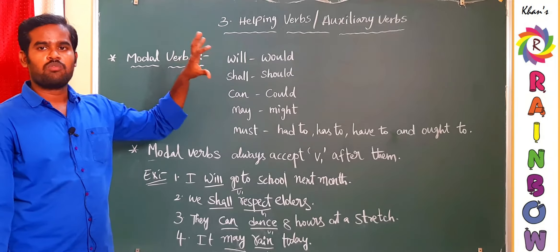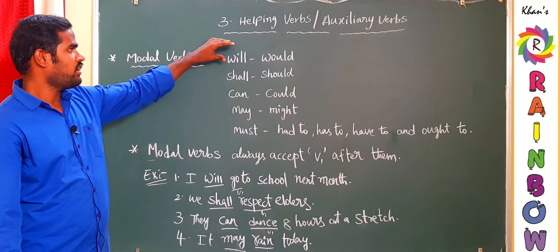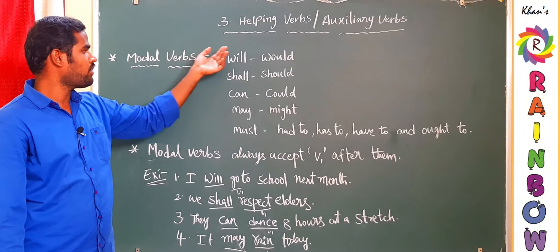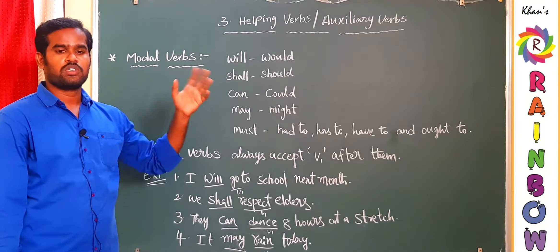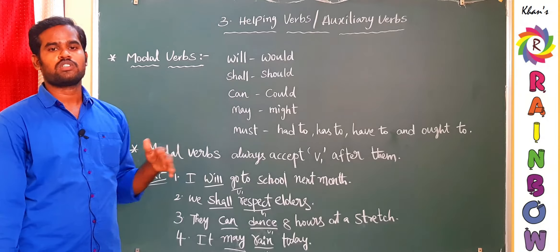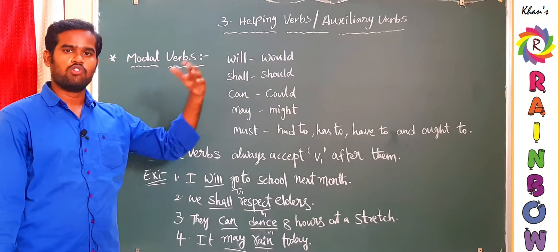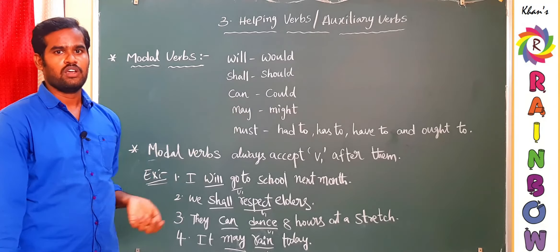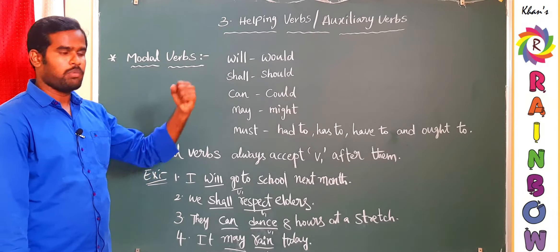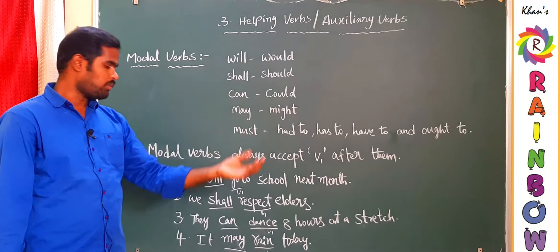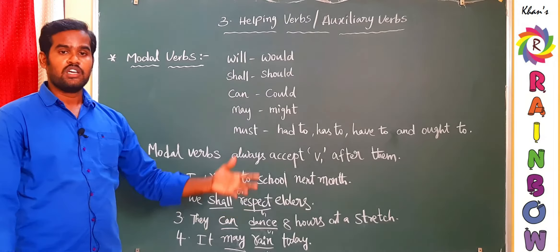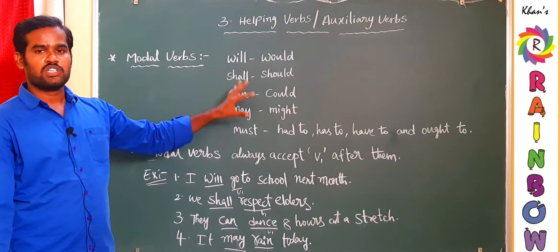Each modal verb has its own function. 'Will' indicates futurity — actions to be done in the future. 'Shall' expresses obligations and responsibilities. 'Can' and 'could' express ability, ask for permissions, or give permissions — for example, 'Can I come in, sir?' or 'You can go.' 'May' and 'might' express possibility — for example, 'It may rain today,' meaning it may or may not rain.